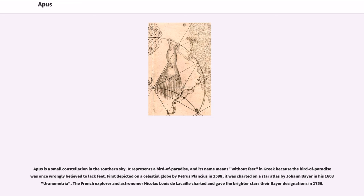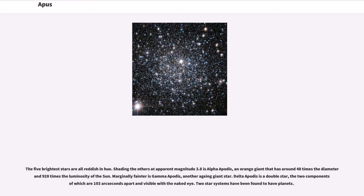First depicted on a celestial globe by Petrus Plancius in 1598, it was charted on a star atlas by Johann Bayer in his 1603 Uranometria. The French explorer and astronomer Nicolas-Louis de Lacaille charted and gave the brighter stars their Bayer designations in 1756. The five brightest stars are all reddish in hue. Shading the others at apparent magnitude 3.8 is Alpha Apodis, an orange giant that has around 48 times the diameter and 928 times the luminosity of the Sun.